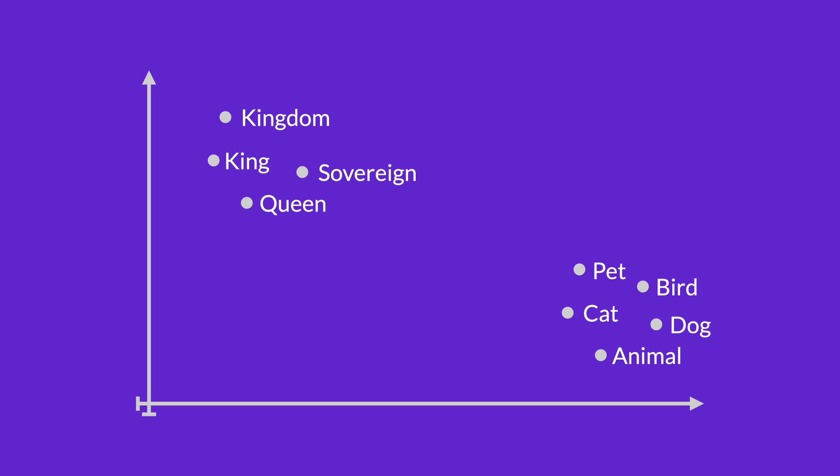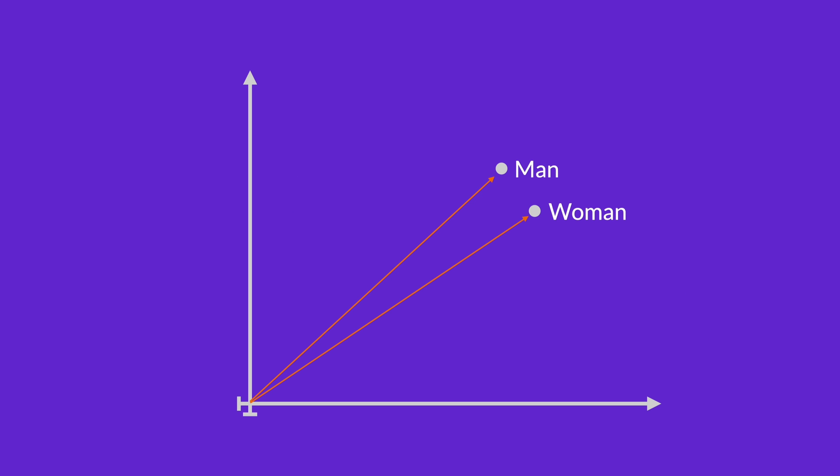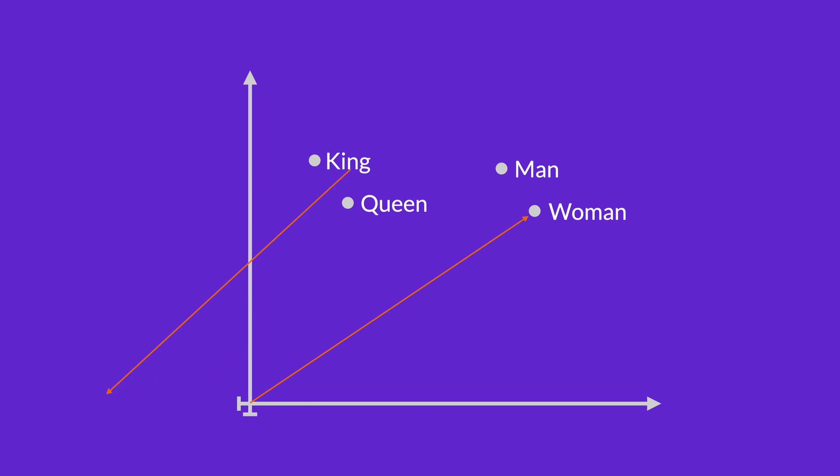For some cases, it is even possible to make sure that the relative distances between words represent contextual information. In a very commonly used example, if this is how 'man' and 'woman' are positioned relative to each other, this is how 'king' and 'queen' would be related. So by subtracting the vector for 'man' from the vector for 'king', and by adding the 'woman' vector to it, you get the vector for 'queen'.